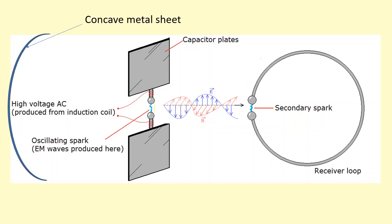Hertz also noticed that metal sheets reflected the radio waves that are produced. So he placed a concave metal sheet on the left hand side here, and this was able to reflect the radio waves that were sent in this direction and helped focus them and send them towards this direction.